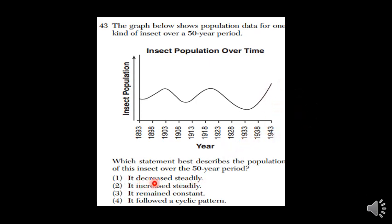So it decreased steadily? No, we see it going up and down. It didn't increase steadily. Remained constant? That would be the same number of insects year after year after year. That's not it.